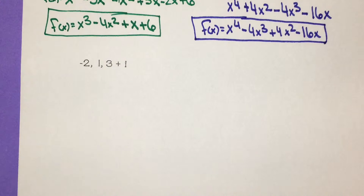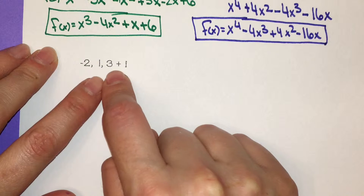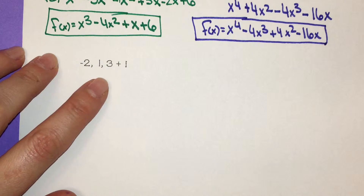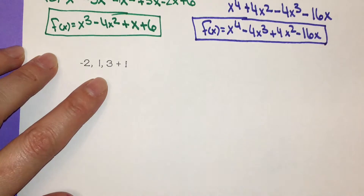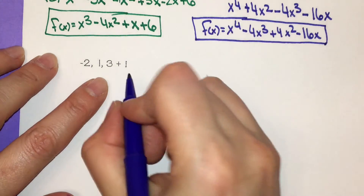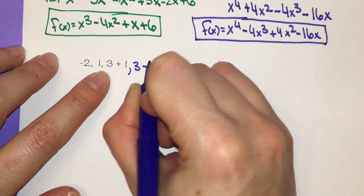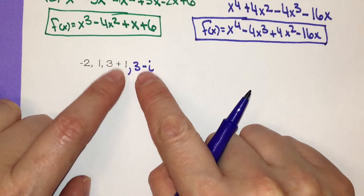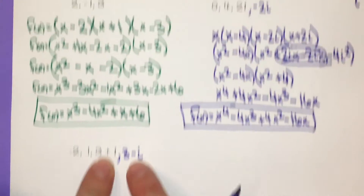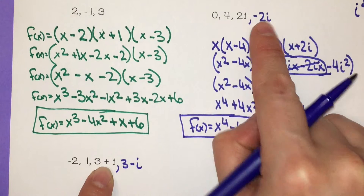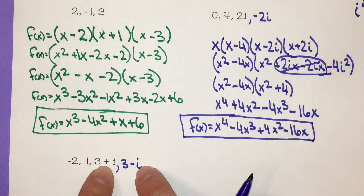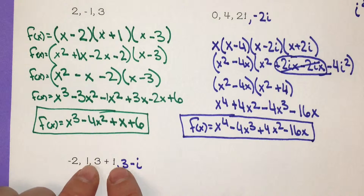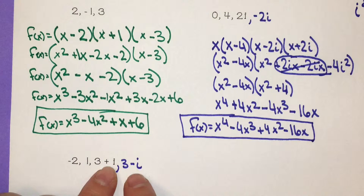One more example with an imaginary number, slightly different. We have roots negative 2, 1, and 3 plus i. Anytime you have i, you also need its conjugate, so there's one more root: 3 minus i. You always need one with a plus and one with a minus in front of the i itself.